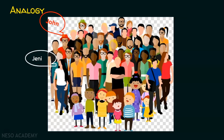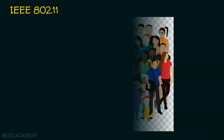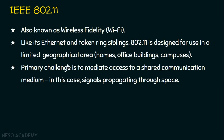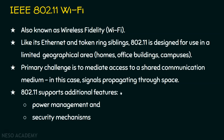Now let's dive into the topic. IEEE 802.11 is also known as wireless fidelity, or Wi-Fi. Like its Ethernet and Token Ring siblings — which are wired LAN technologies — IEEE 802.11 is designed for use in a limited geographical area, such as homes, office buildings, or campuses. It is a wireless LAN technology, and the primary challenge is to mediate access to a shared communication medium — in this case, signals propagating through air. Always there is a security concern with wireless. In addition, 802.11 supports power management and security mechanisms.